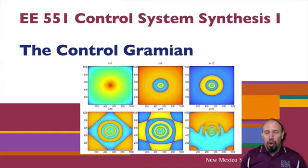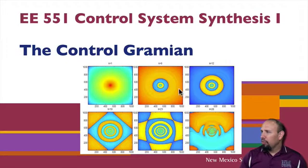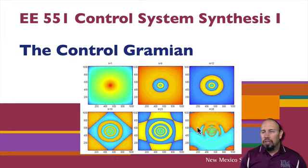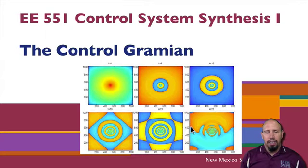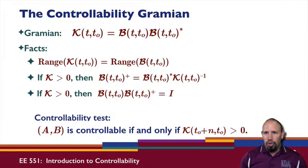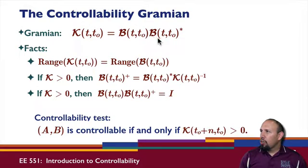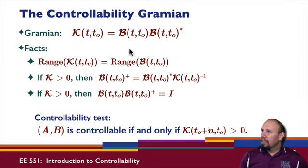We're now going to talk about the control Gramian. There's one particular author who for large-scale systems showed that the Gramian is related to certain figures. The control Gramian, or sometimes the controllability Gramian: our control map is a matrix, and so I can take the control map times its adjoint and define that as the controllability Gramian.